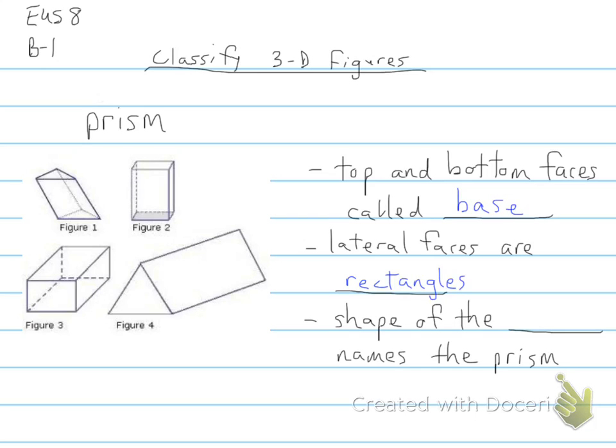The lateral faces are always going to be rectangles. And then, of course, the shape of the base will name the prism. For example, this one and this one, the base is a triangle, so that would be a triangular prism.